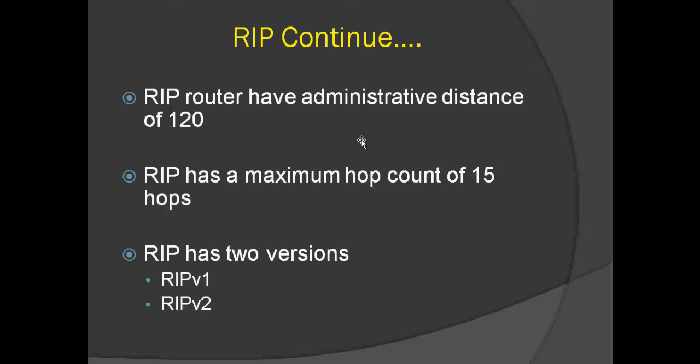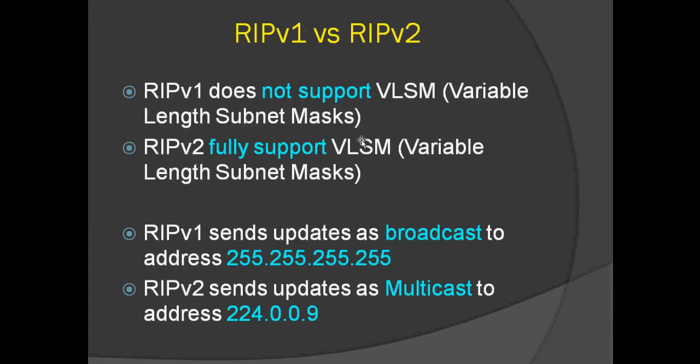RIP has a maximum hop count of 15 hops. That means any network that is 16 hops away or more is considered unreachable to RIP. RIP has two versions: RIP version 1 and RIP version 2.